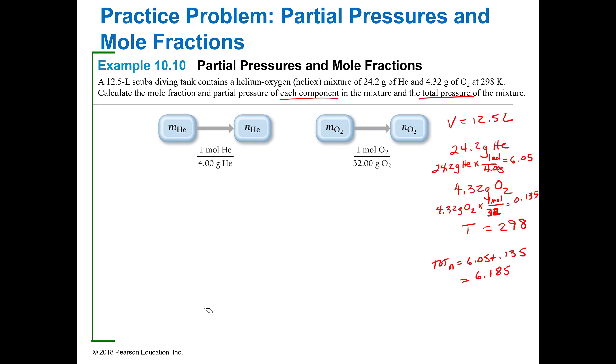The mole fraction of helium is going to be the number of moles of helium divided by the total moles, and that's going to give me 0.978. The mole fraction of oxygen is 0.135 moles of O2 divided by the total, which is 0.022.